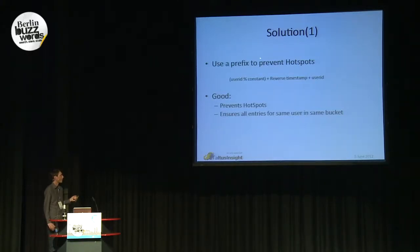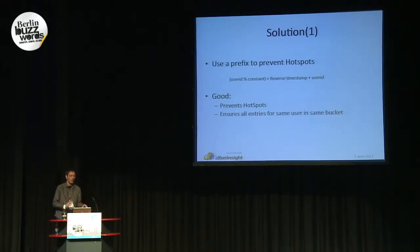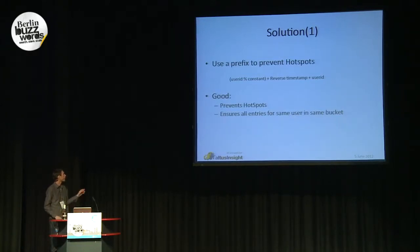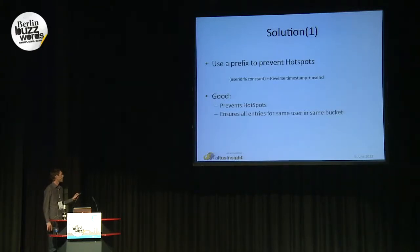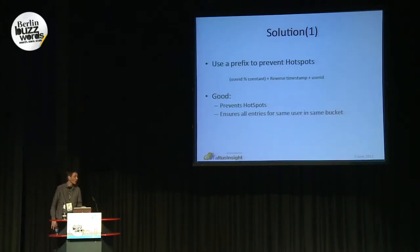What we did is take 100 buckets, and then for each user ID, we compute a bucket ID. We take the user ID, use the modulo operation by the bucket size, and we end up with a bucket ID between 0 and 99. This is good because we were able to prevent any hotspots. This key design also ensures that all entries for the same user end up in the same bucket.